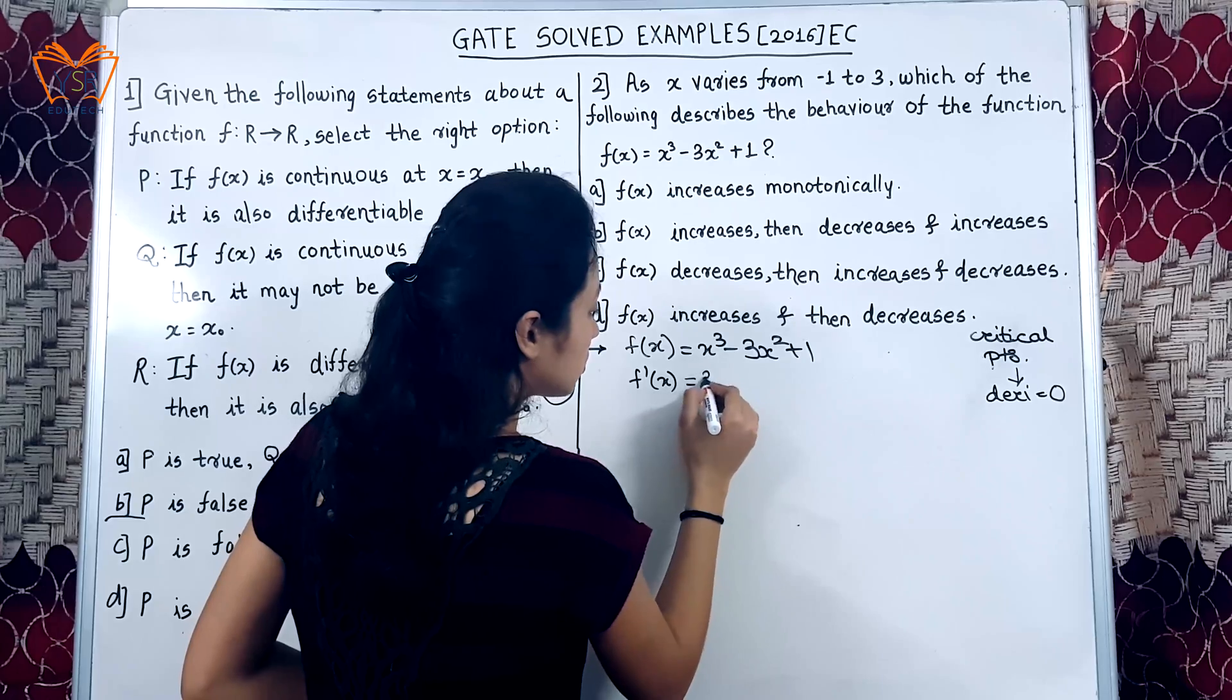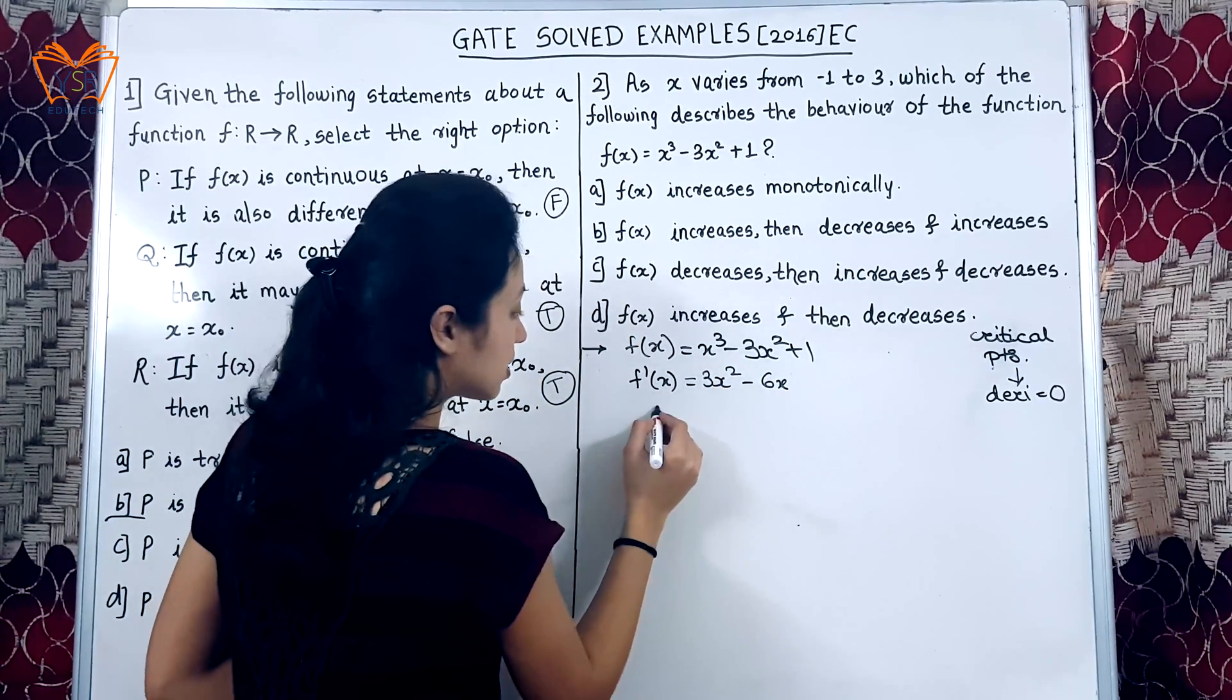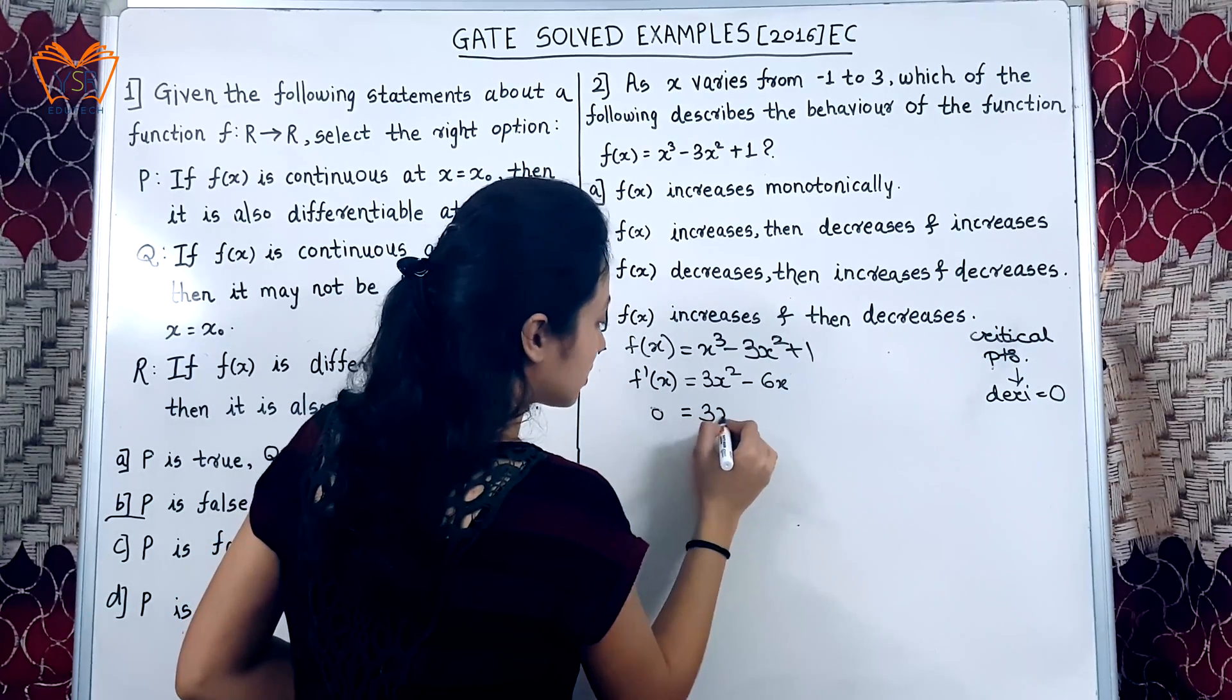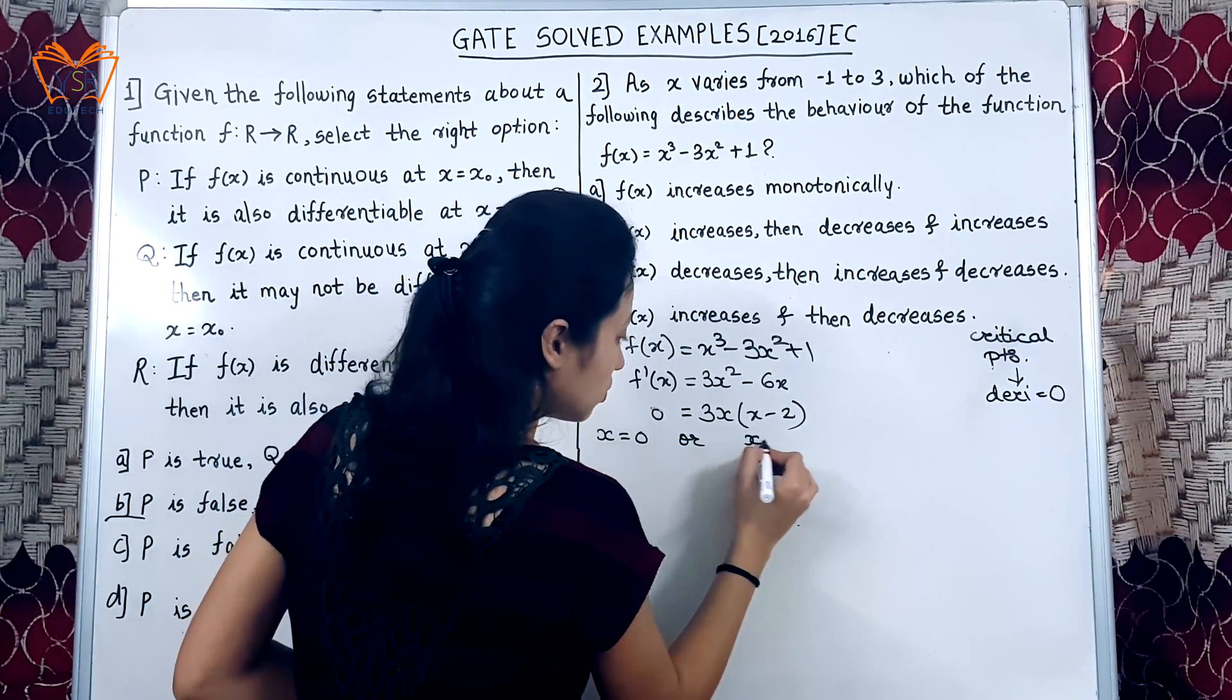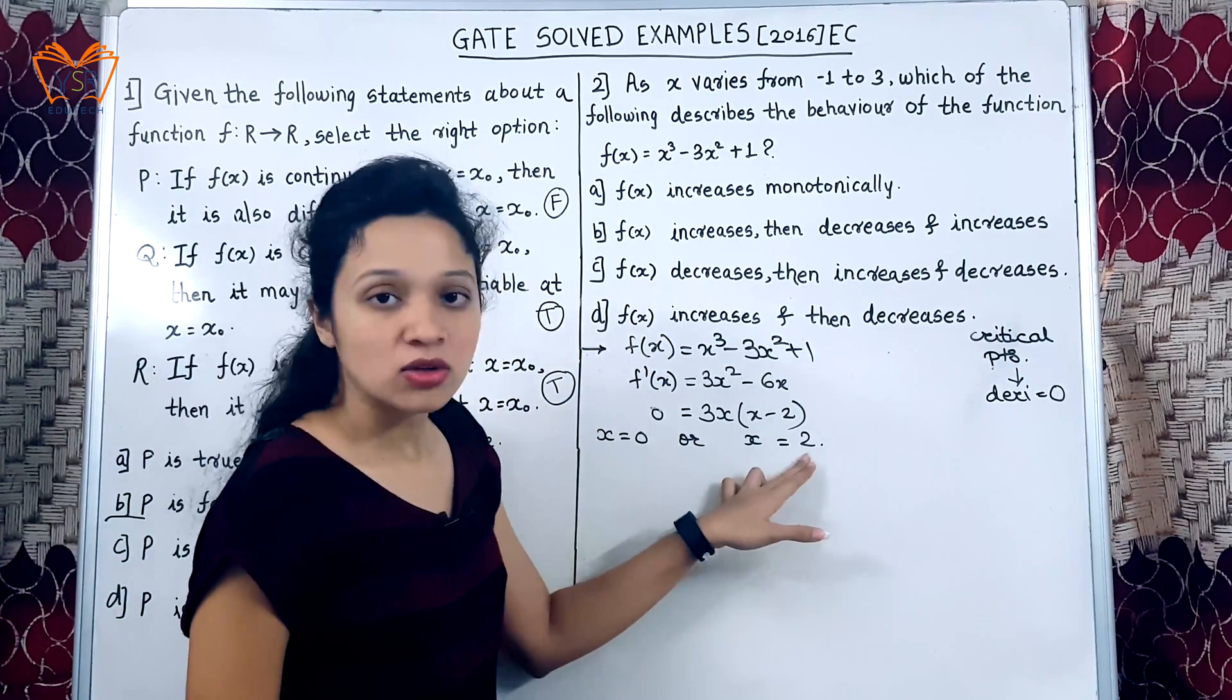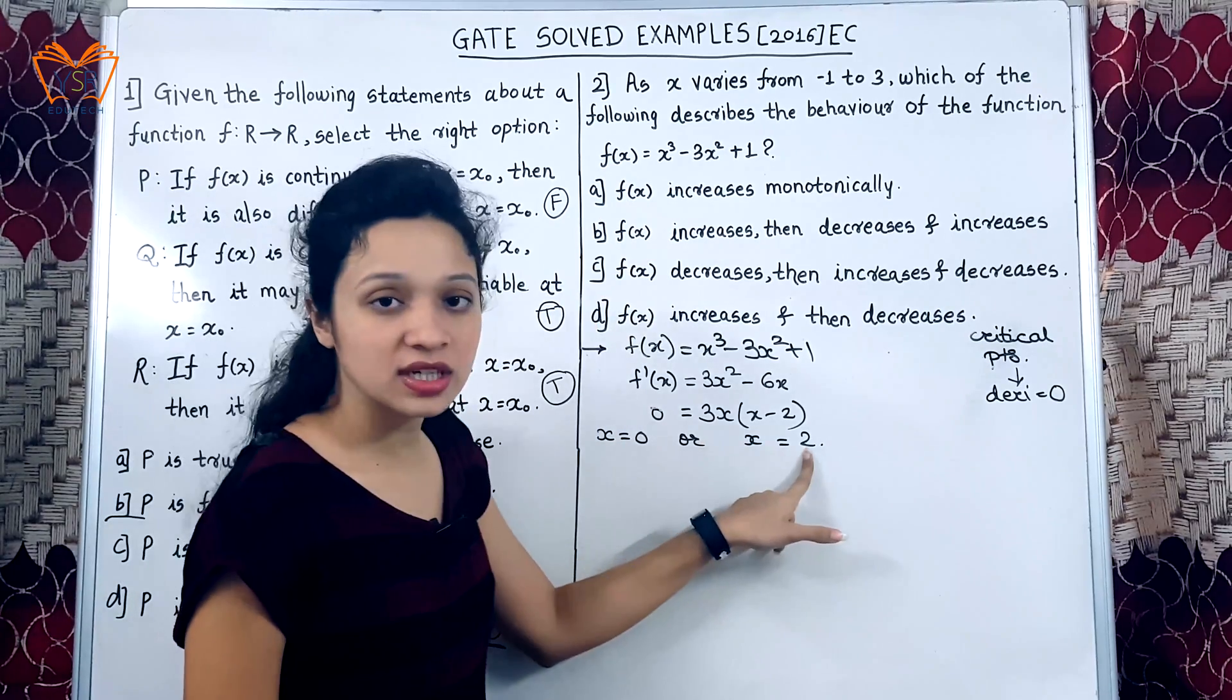So, f dash x is equal to 3x square minus 6x. Derivative is equal to 0. So, let us take 3x as common, we get x minus 2. So, points will be x equal to 0 or x equal to 2. These are the two critical or stationary points where the given function f of x will be changing its direction.